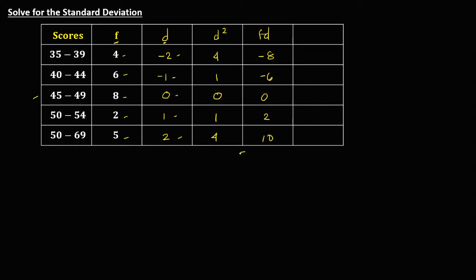Then solve for the summation of F times D by adding all these numbers. Negative 8 and negative 6 give negative 14. Positive 2 and 10 give 12. So negative 14 plus 12 equals negative 2.